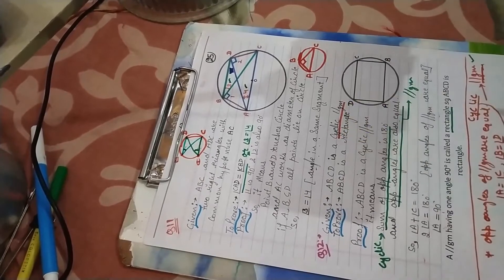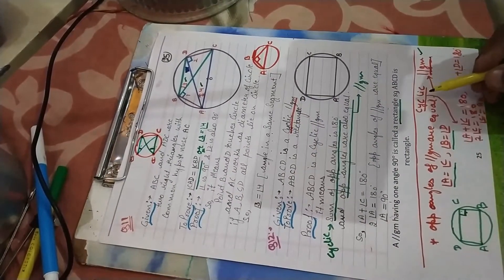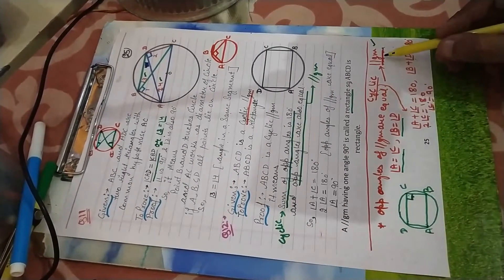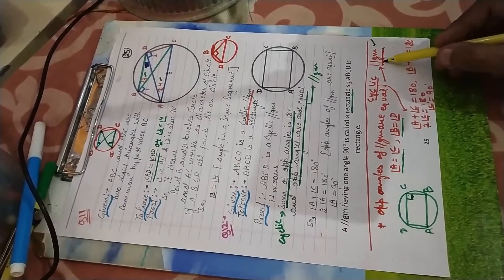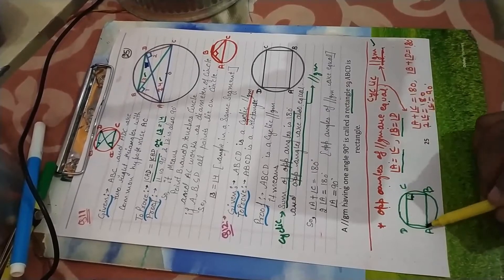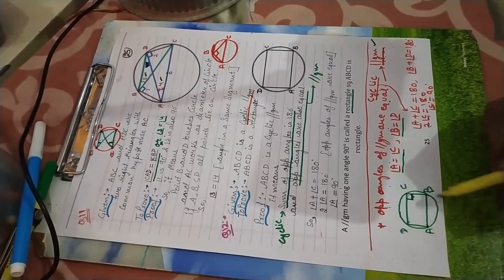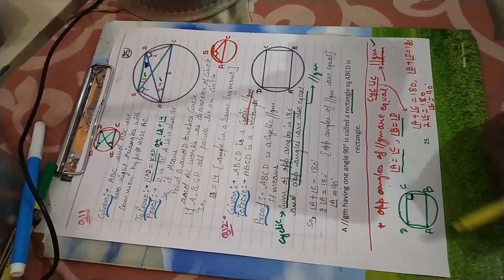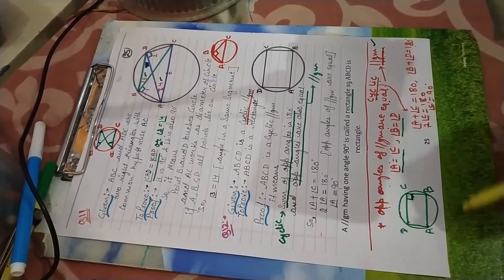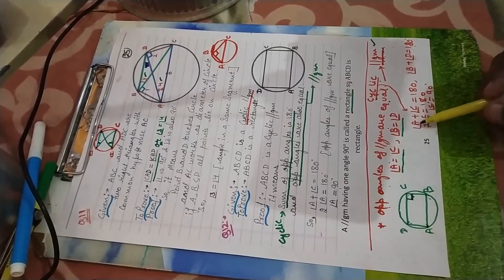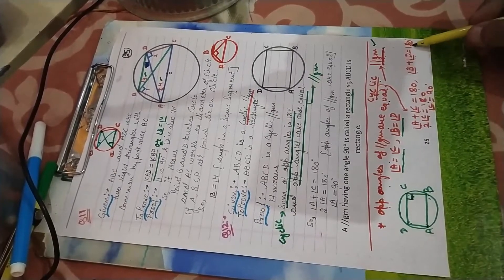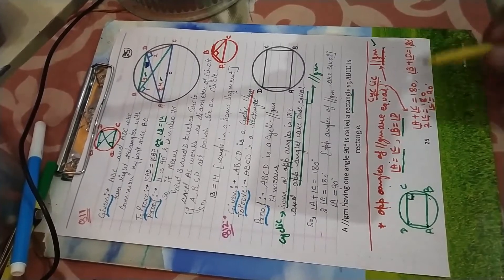A cyclic parallelogram means the given diagram is cyclic and also a parallelogram. If it is a parallelogram, then opposite angles are equal: angle A equals angle C, and angle B equals angle D. If it is cyclic, then the sum of opposite angles is 180°: angle A plus C equals 180°, and angle B plus D equals 180°.